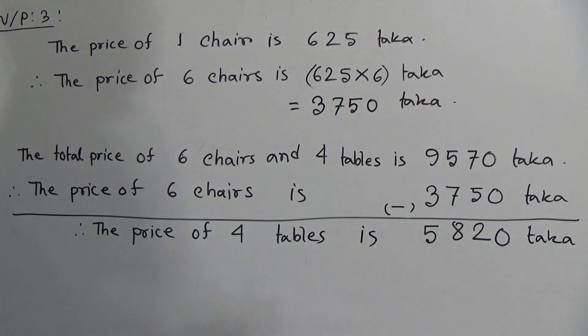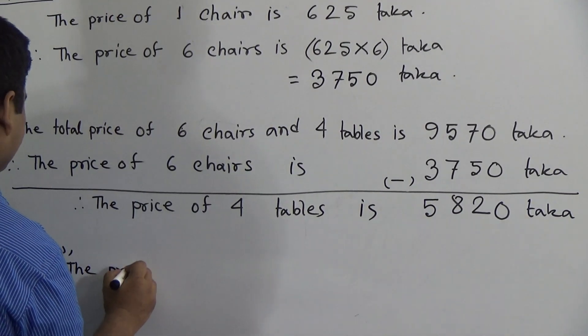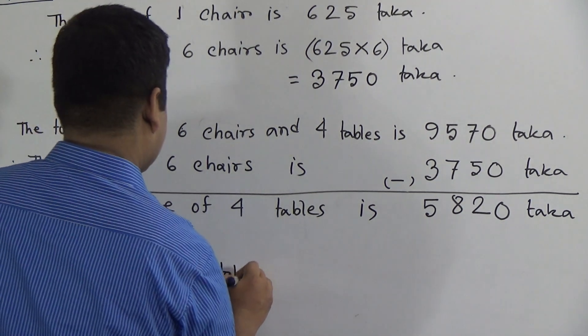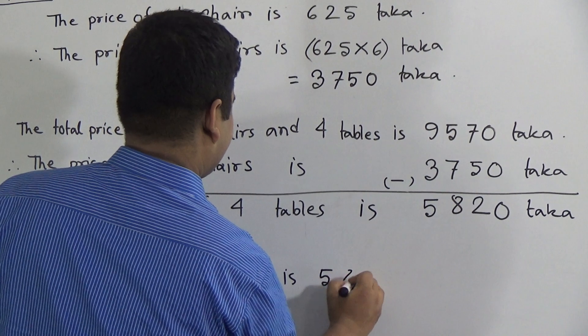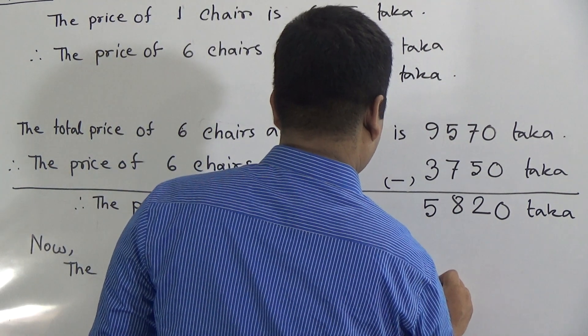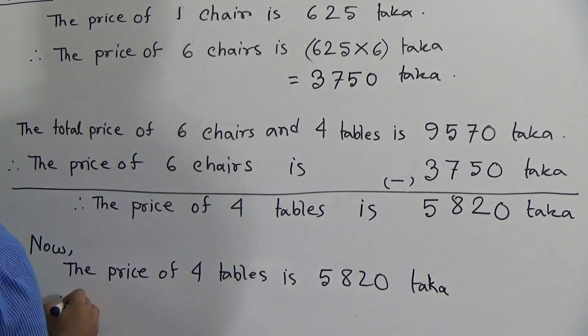5820 taka is the price of 4 tables. But students, the question asks you to find out the price of one table. So from this information, we can easily find out the price of one table. Now, the price of 4 tables is 5820 taka.